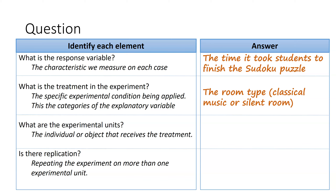The experimental units are the individuals or objects that receive the treatment — here, the 26 math majors. Note: humans don't like to be called experimental units, so usually when an experiment is done on humans, the terms 'subjects' or 'participants' are used instead of experimental units.